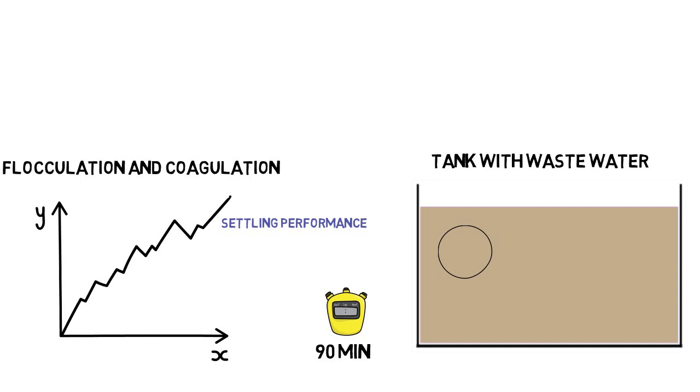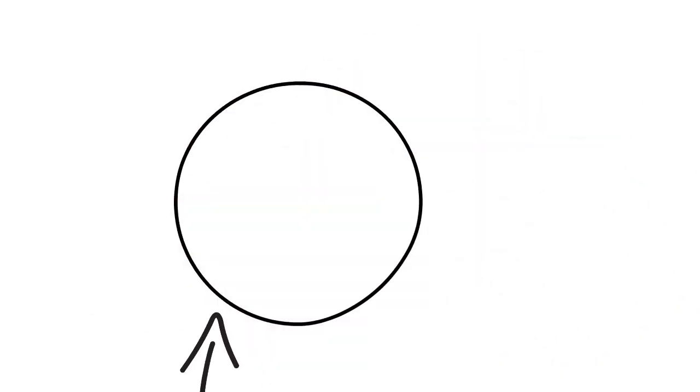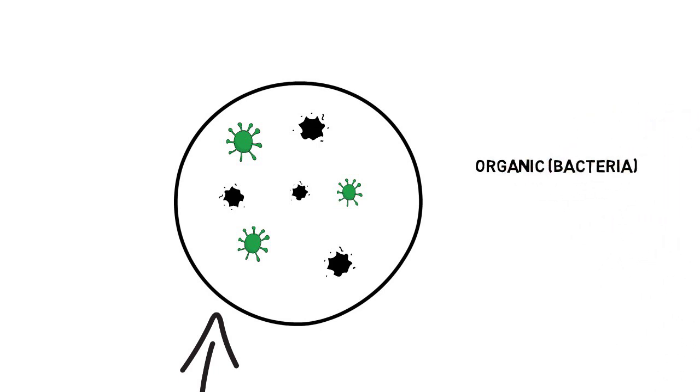Under the microscope you will discover that there are organic and inorganic particles in the waste water. Organic particles can be bacteria, inorganic particles can be for example clay or mineral oxides.